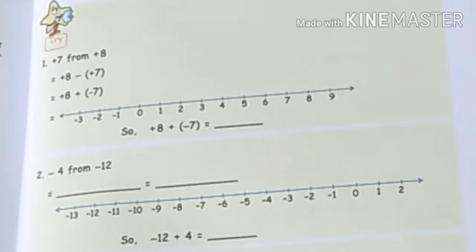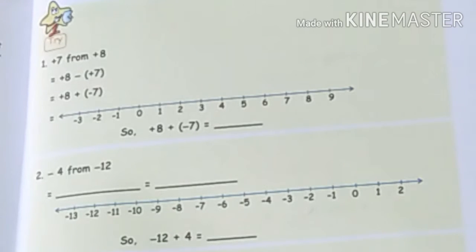Subtraction of integer is an inverse process of addition, just the opposite process. To subtract an integer from another integer, we add the opposite of the first integer to the second integer. Like when we subtract 3 from 9, then 9 plus minus 3. The opposite of plus 3 is minus 3.